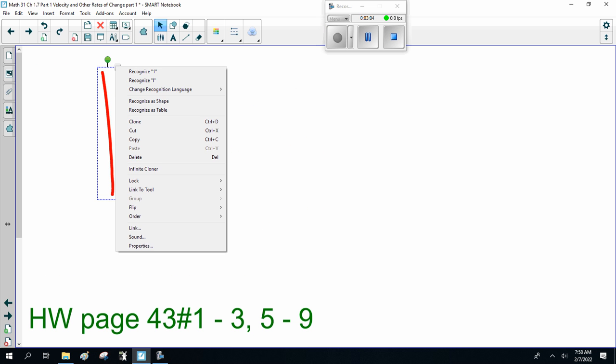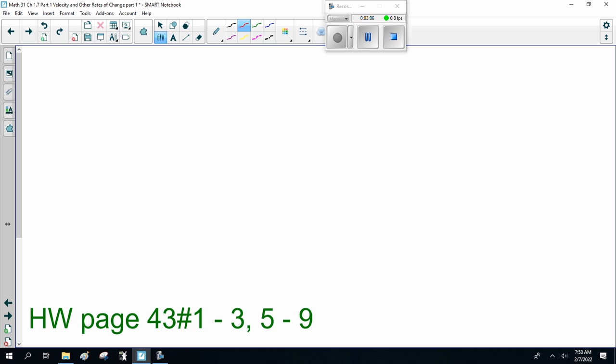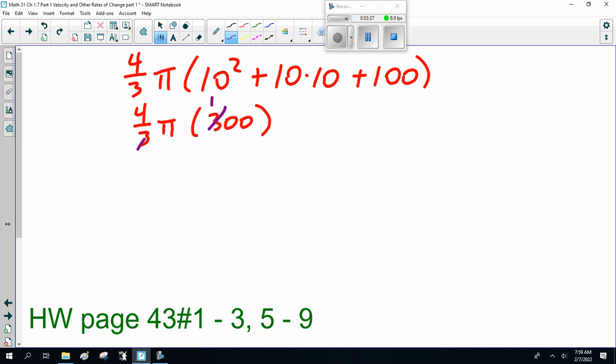So I can just drop the limit and just do simple substitution. 10² + 10×10 + 100. So that is 4/3 π times 300, which is 400π.